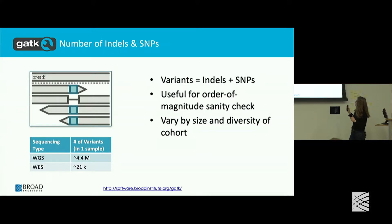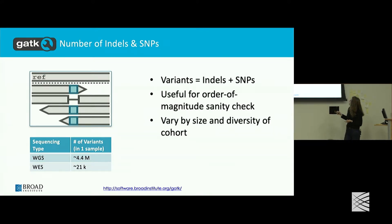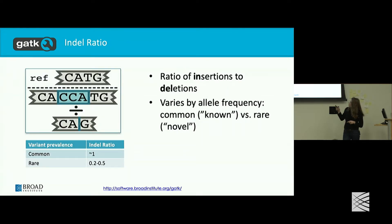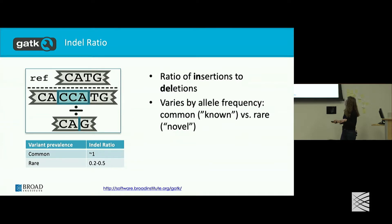The number of indels and SNPs is a great high-level sanity check — these are the numbers you can expect, and a really good way to start out your metrics. For the indel ratio, for common variants you expect your insertions to be about the same as your deletions. For rare variants, that is less so — you expect to have more deletions, because they haven't been filtered out of the genome over time.